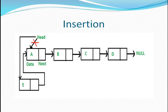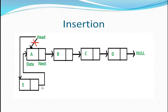Now let us see insertion at the front of the linked list. Previously the linked list had nodes A, B, C, and D. In front of node A I am going to insert another node with value E. I have put a red cross where the old head pointer was, because previously head pointed to A. Now I have to insert one node before A — I will create node E, assign the next pointer the address of A, and assign the head pointer the address of E, so that E becomes my first node.